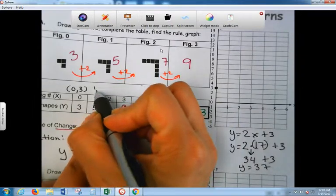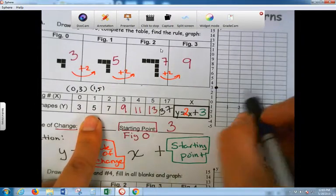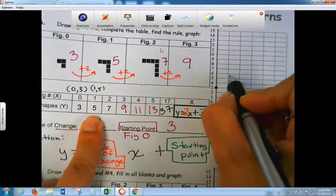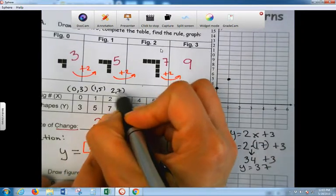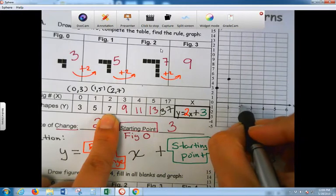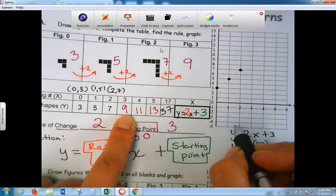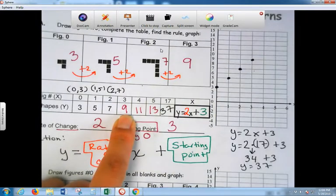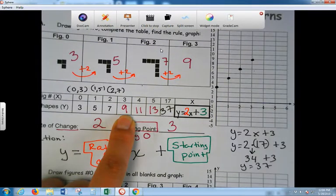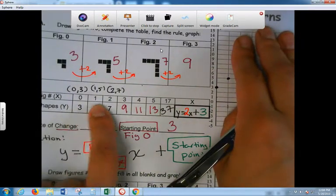1, 5. So 1, then up 5. 2, 7. 2, up 7. 3, 9. 3, 9. Okay? Don't copy. Do them from here. So try to do it on your own and then check.